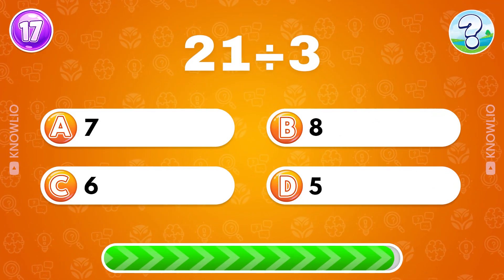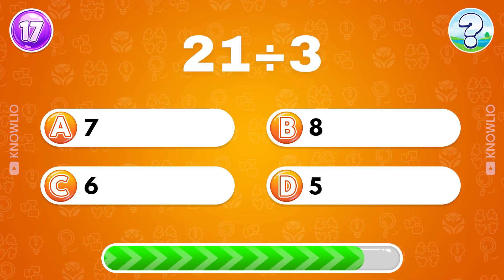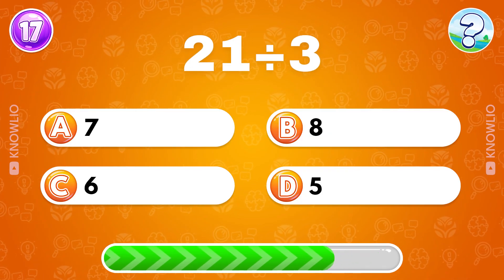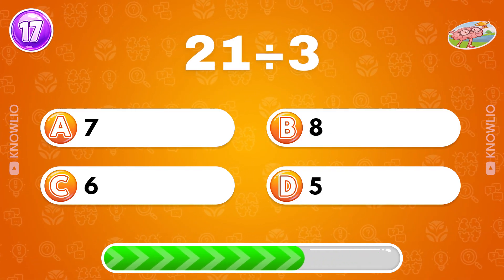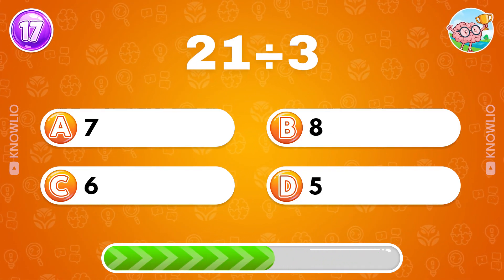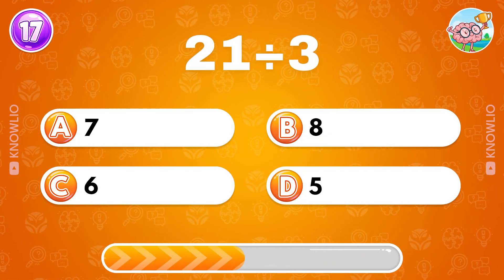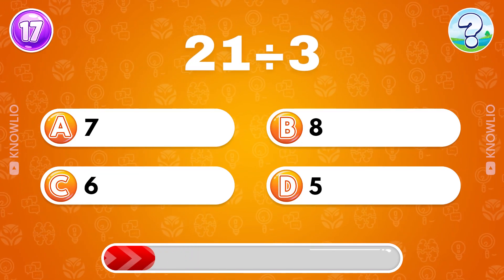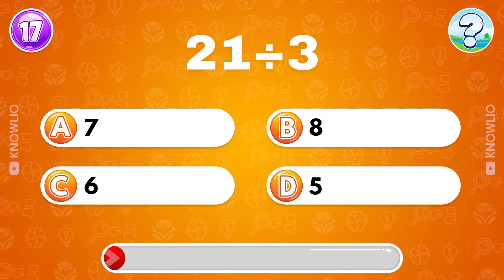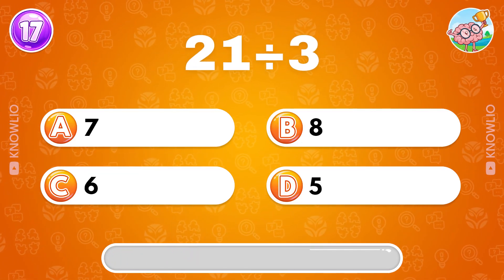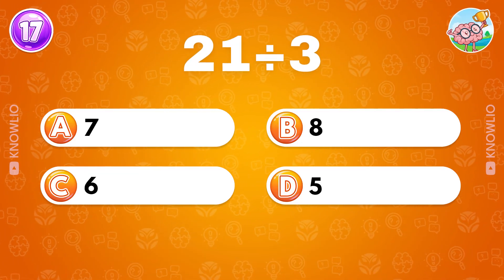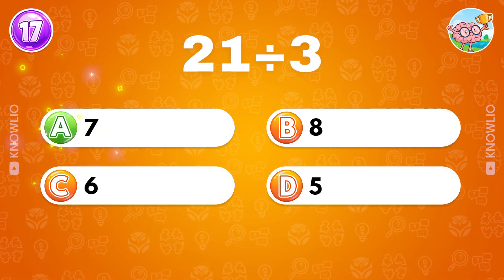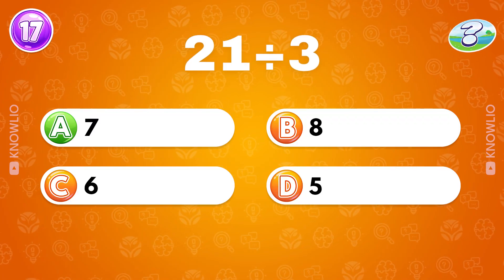What's the result of 21 divided by 3? Answer A: 7.